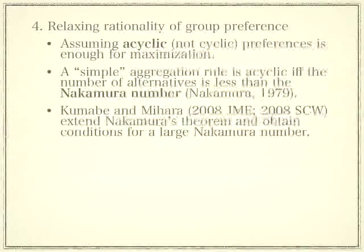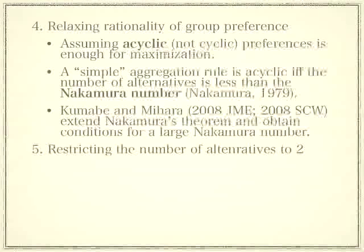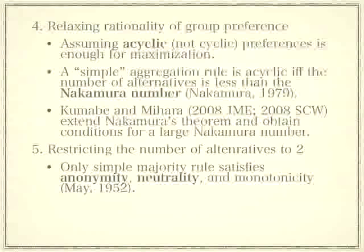So let me take up the case of two alternatives separately. May's theorem says that simple majority rule is the only aggregation rule that satisfies anonymity, neutrality, and monotonicity. Anonymity requires equal treatment of voters, and neutrality requires equal treatment of alternatives. I have papers exploring anonymity and neutrality without restricting the number of alternatives.